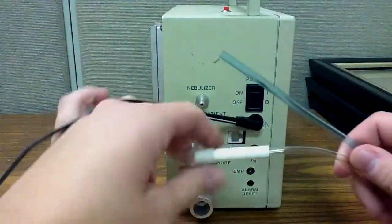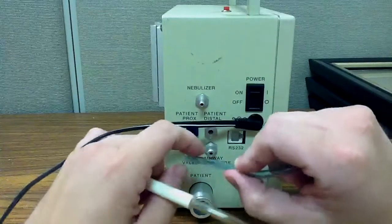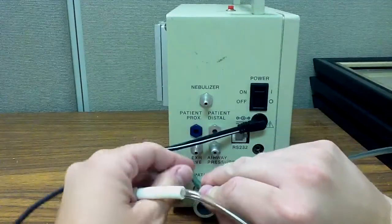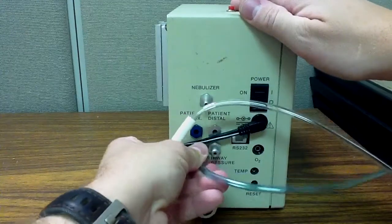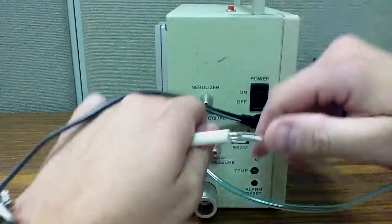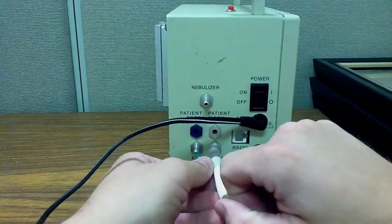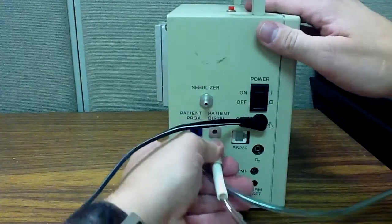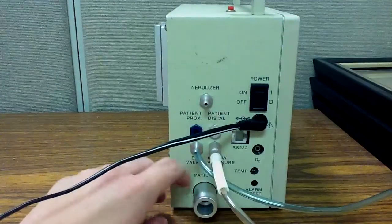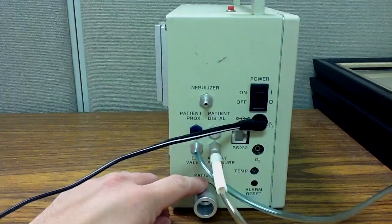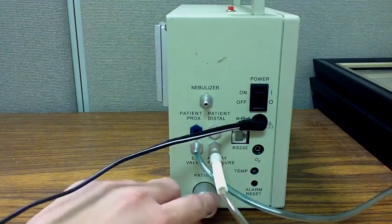So these lines here. My exhalation valve line will simply slide right in. My airway pressure monitoring transducing line will slide in like that. And then the ventilator circuit itself will plug in here.